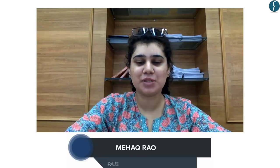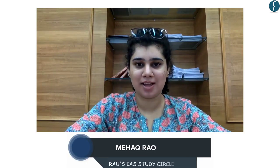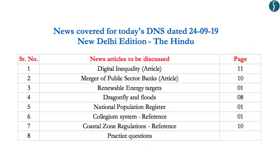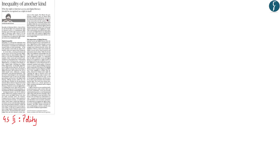Hello and welcome to the Daily News Simplified, an answer to the what, why, and how of newspaper reading. Today we will be analyzing important news appearing in the Delhi edition of The Hindu newspaper dated 24th September 2019. The topics to be discussed today are reflected on your screen and the time stamping for the same has been provided in the description box below.